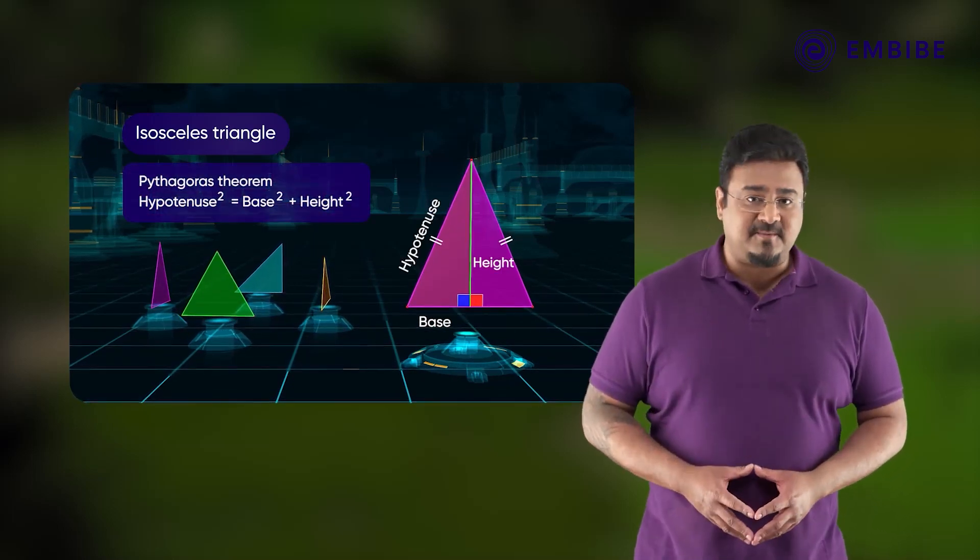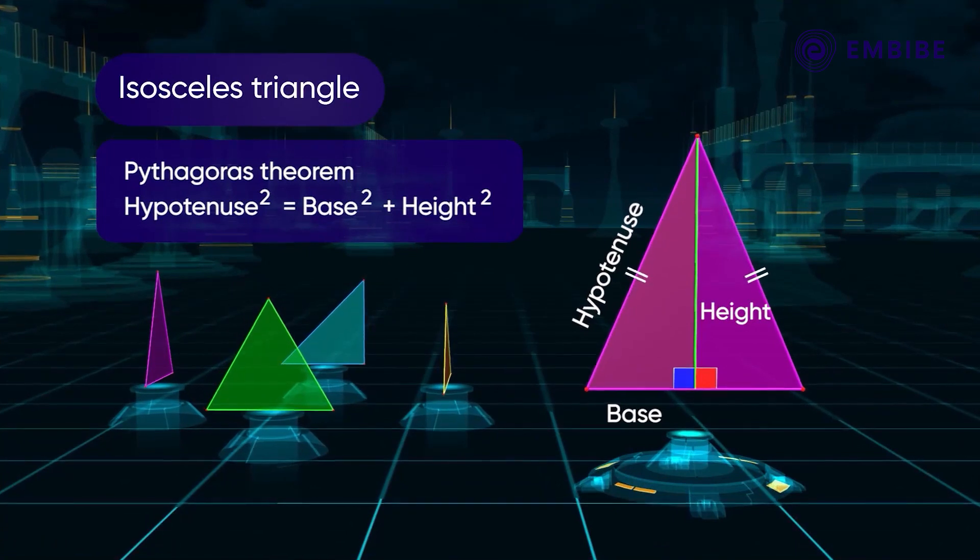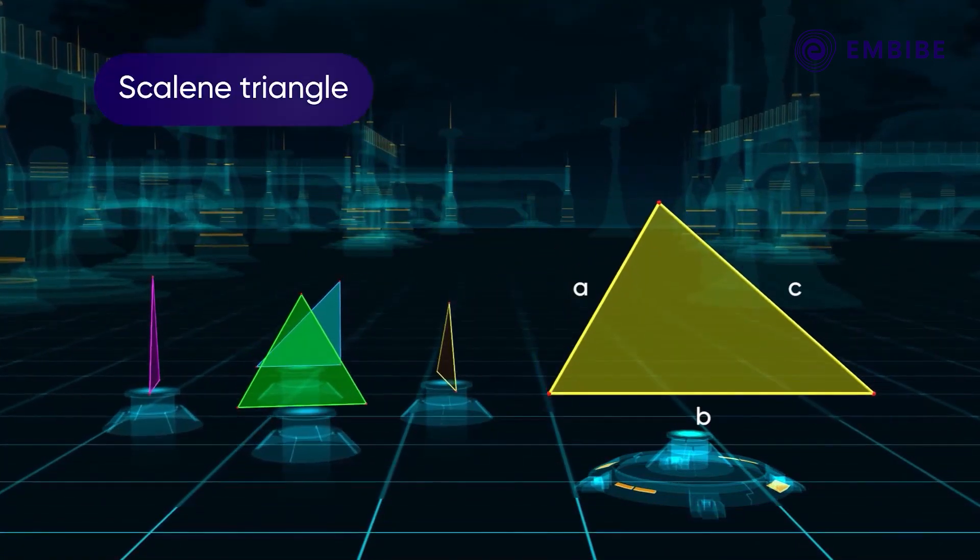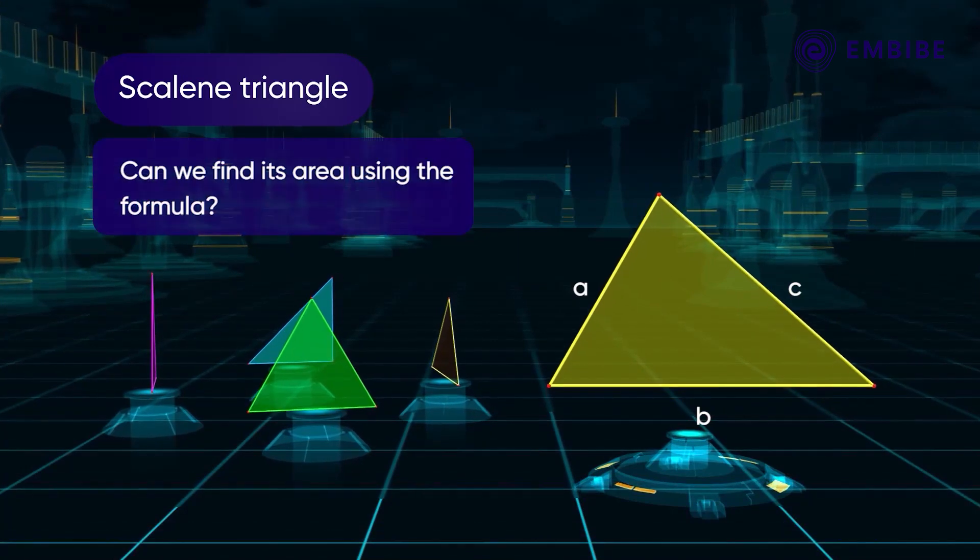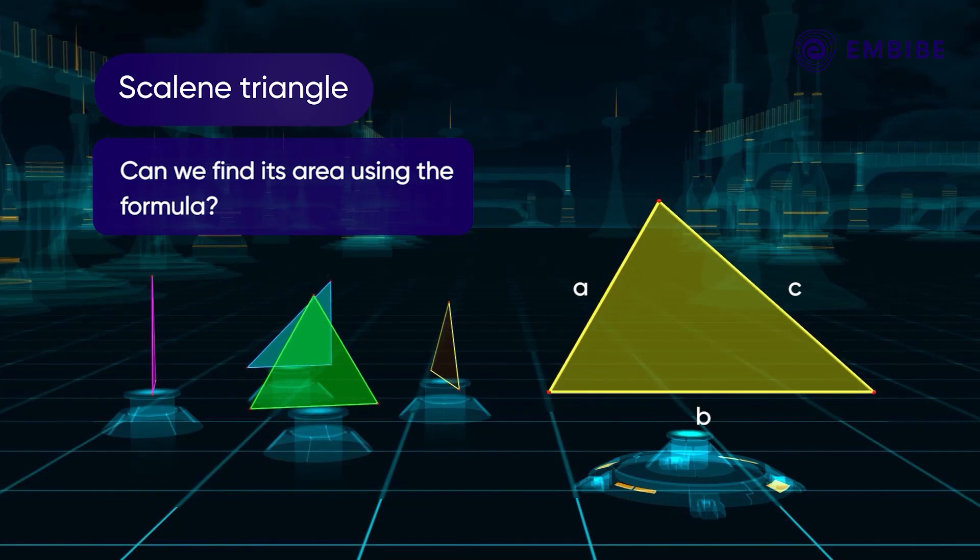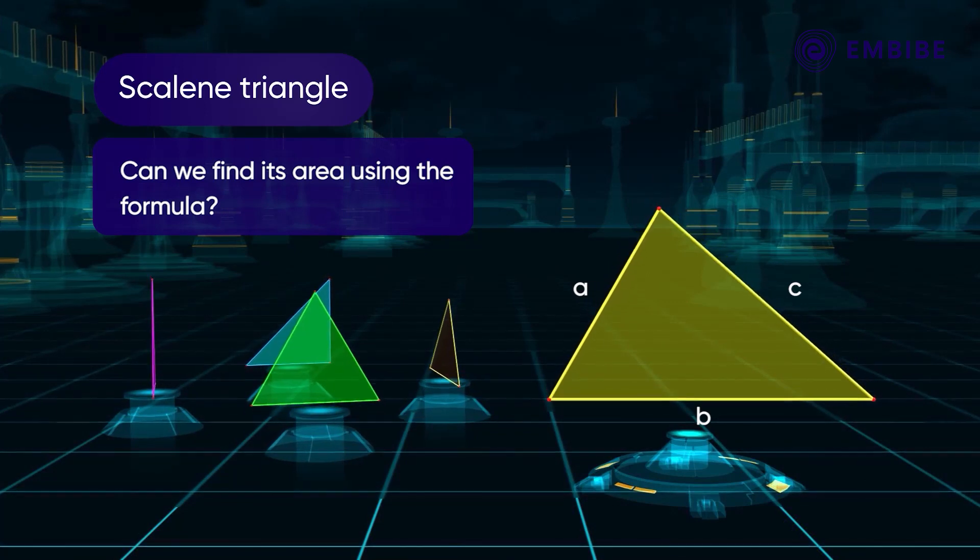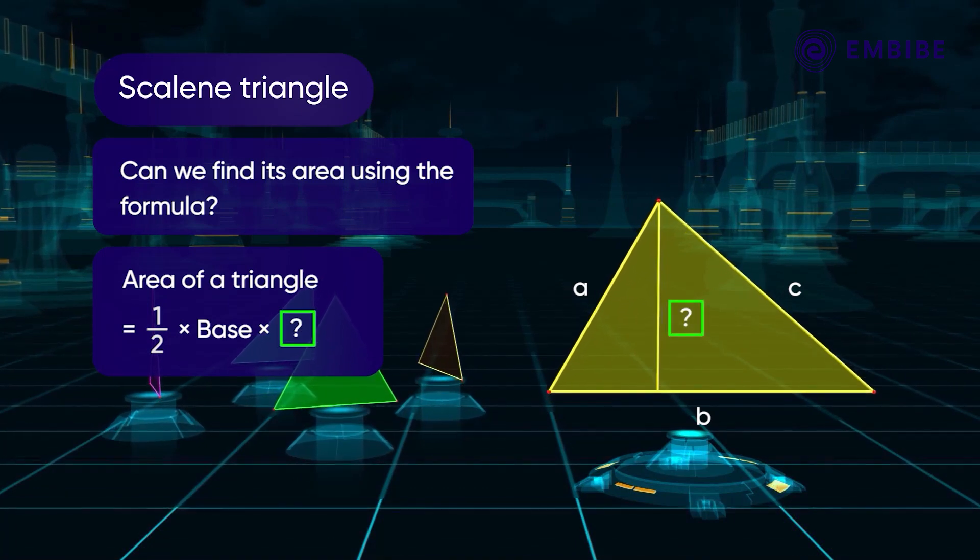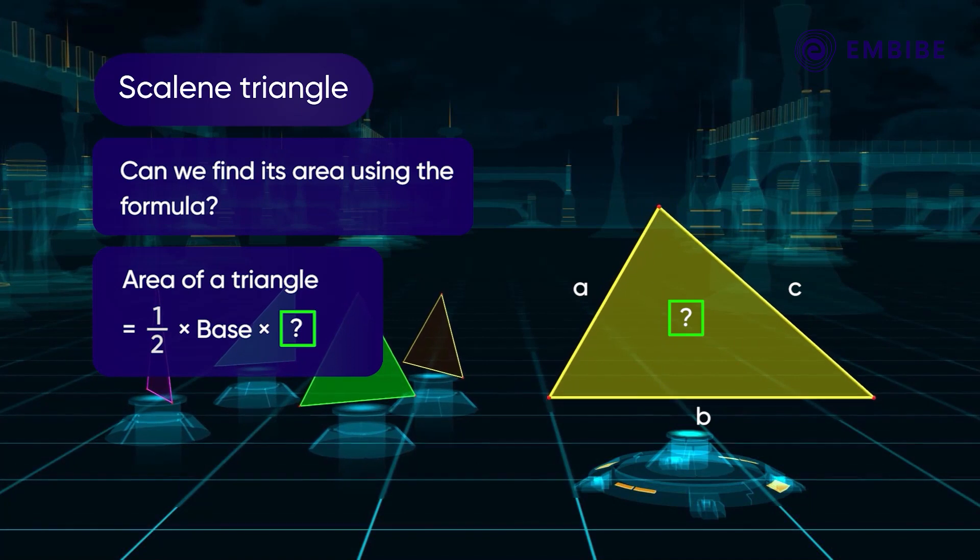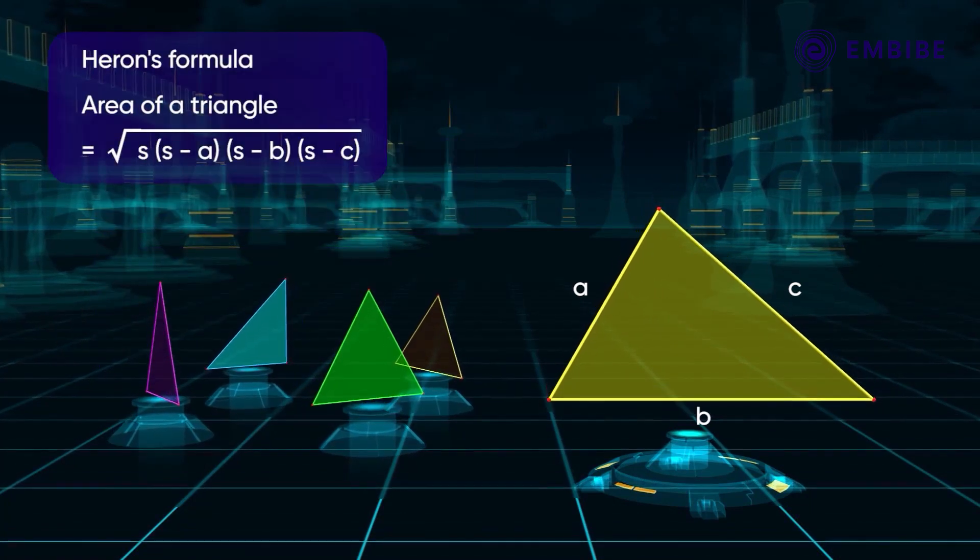Now suppose that the lengths of the sides of a scalene triangle are given. Can we find its area using the formula? Oh no, its height is not given and we don't have a clue to find it. How will you find its area then?